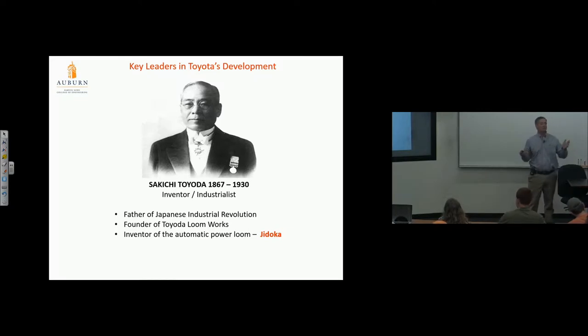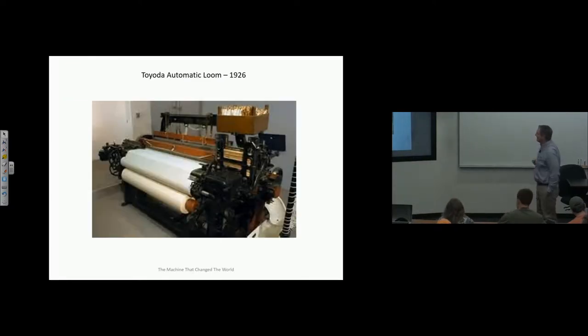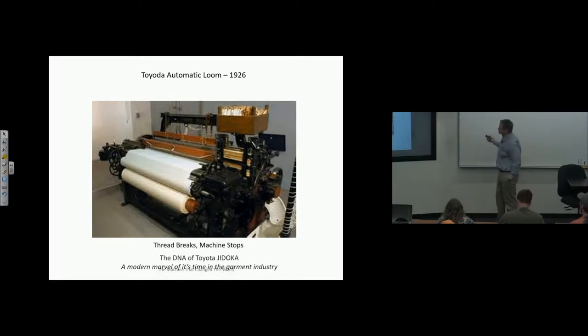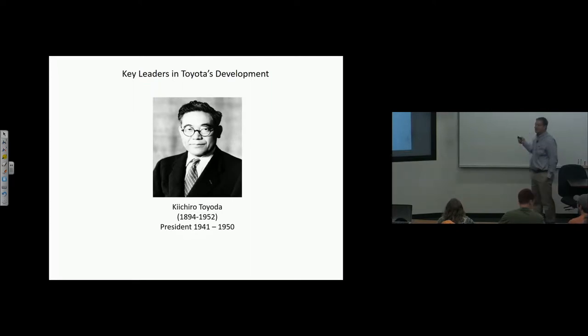This is the inventor of jidoka—when there's a defect, the process stops. The machine interprets the broken thread and stops. It's in the DNA of Toyota that they can't build a product and pass it out of station if there's a defect. He developed the 5 Why technique, the basis of Toyota's scientific approach as defined by Taiichi Ono. Notice the name—the Toyota family is actually spelled with a D. They changed it to a T, maybe for marketing, after a contest.